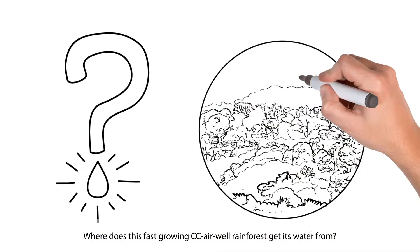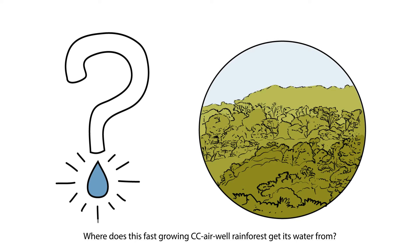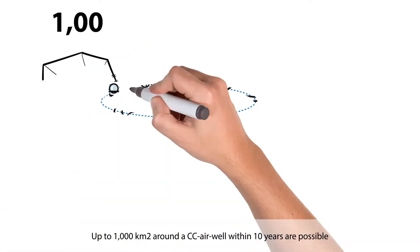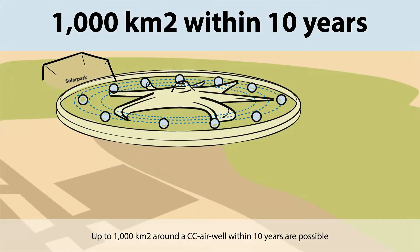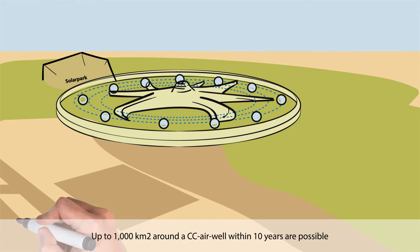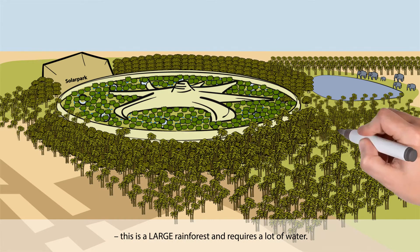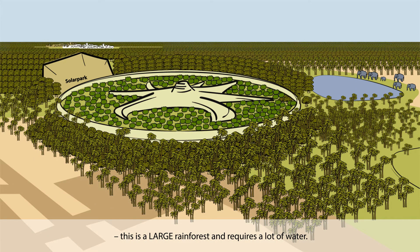Where does this fast-growing CC airwell rainforest get its water from? Up to 1,000 square kilometers around a CC airwell within 10 years are possible. This is a large rainforest and requires a lot of water.